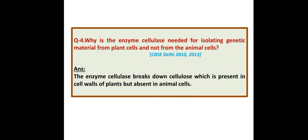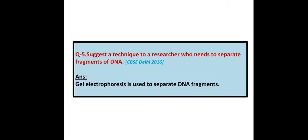Why is the enzyme cellulase needed for isolating genetic material from plant cells and not from animal cells? Answer: The enzyme cellulase breaks down cellulose, which is present in the cell walls of plants but absent in animal cells.